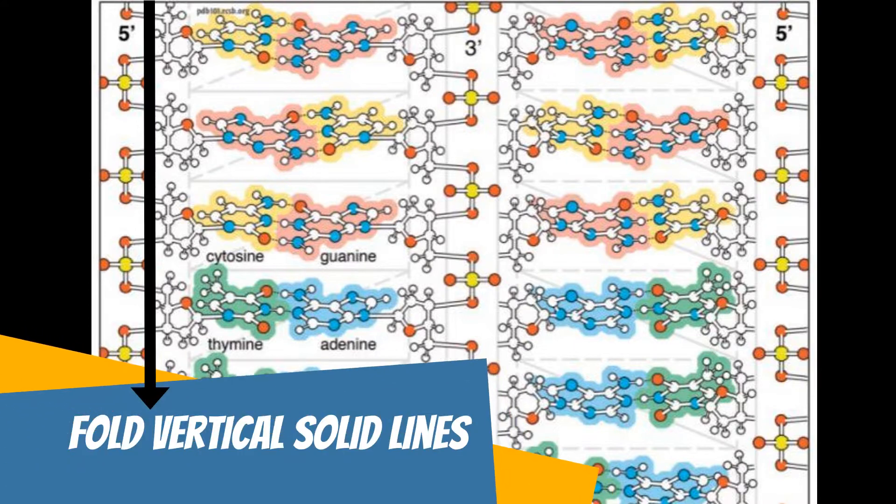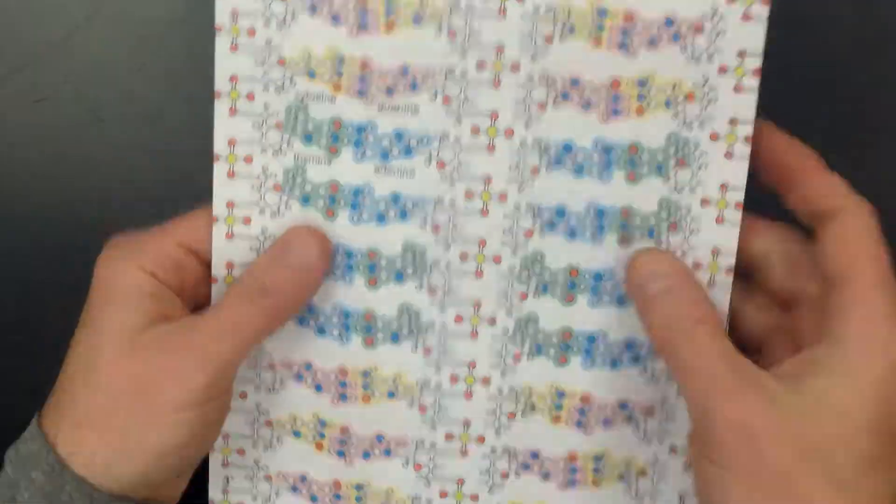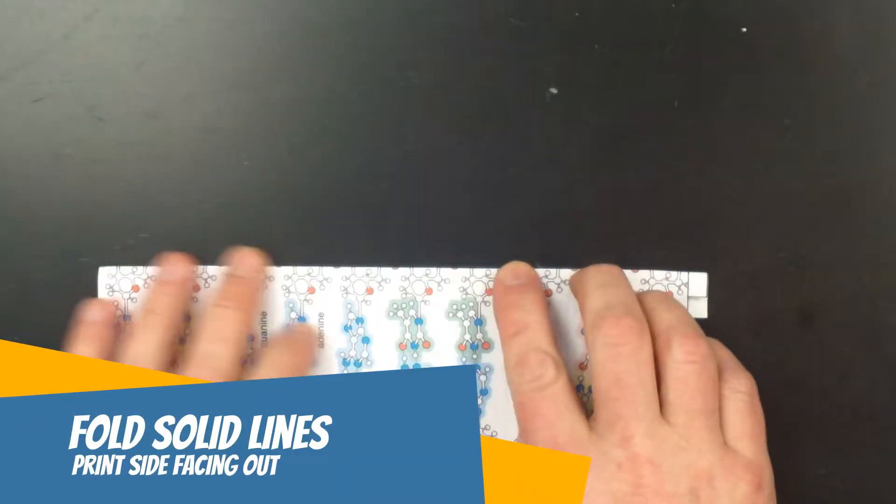The next step is to make folds along the long, vertical solid lines. These folds should be made so the solid lines are visible along the outside edge of the crease.